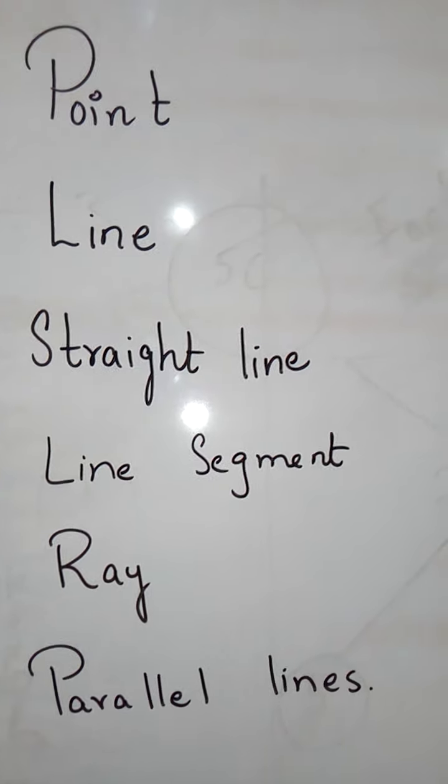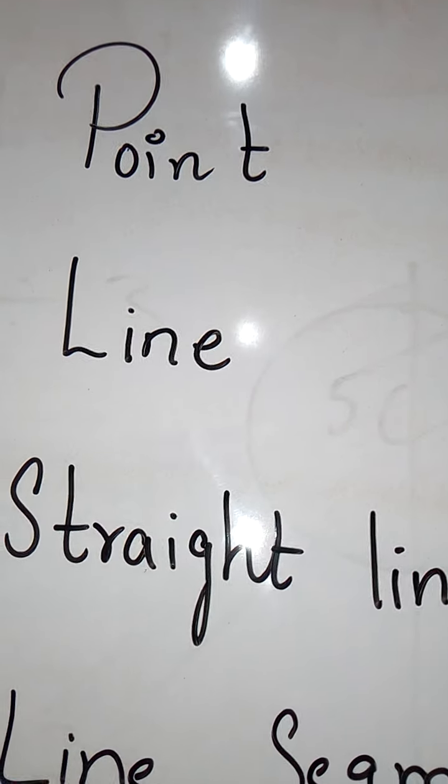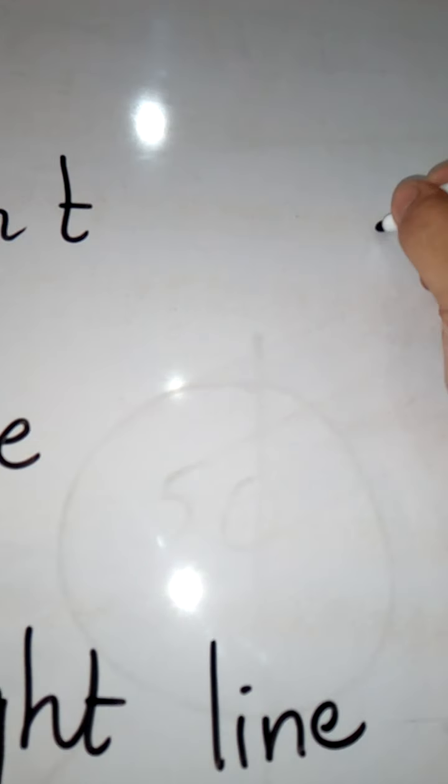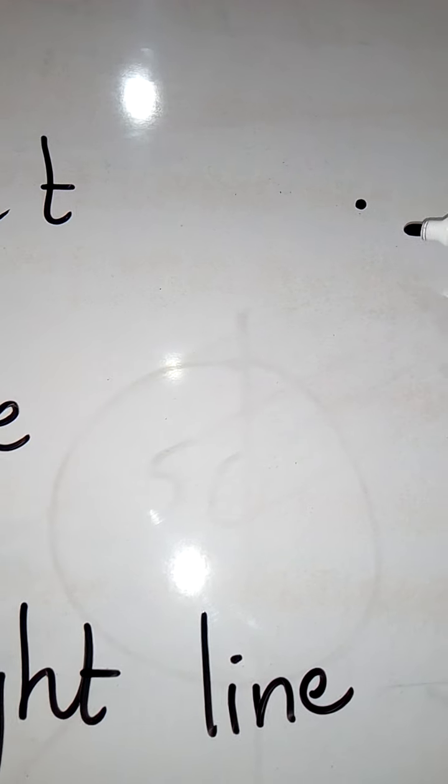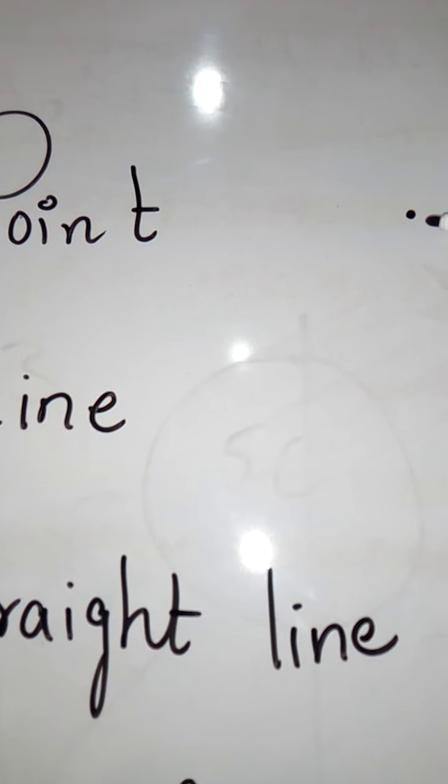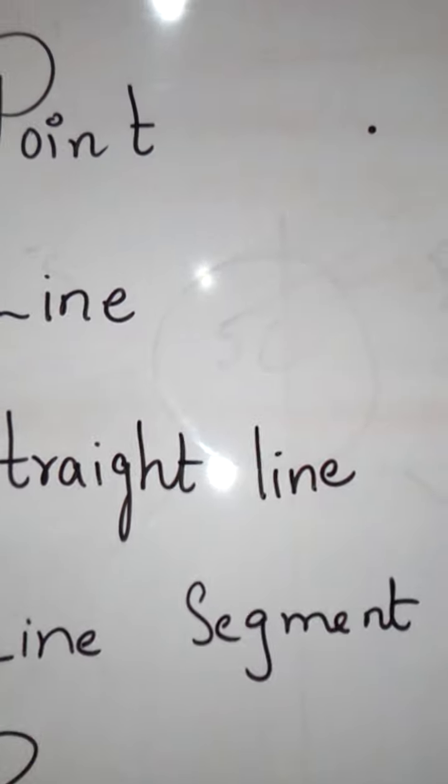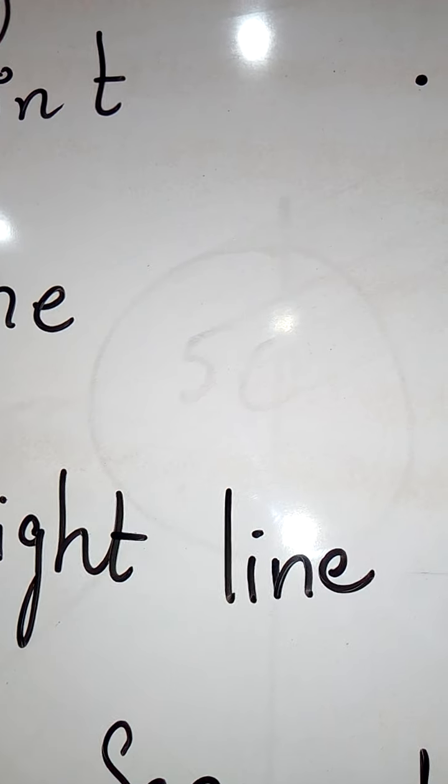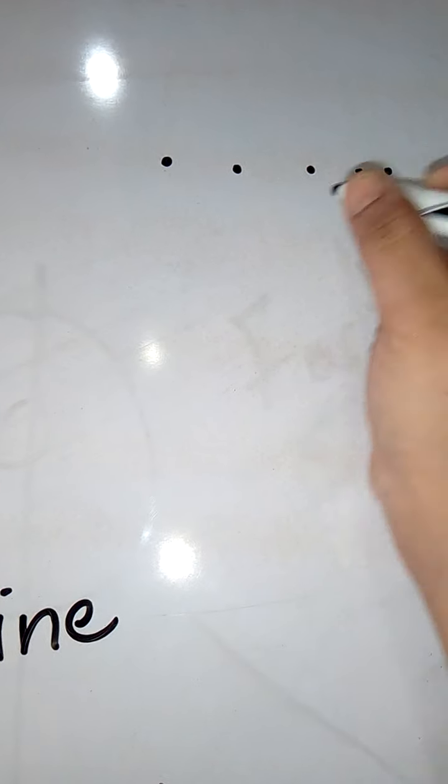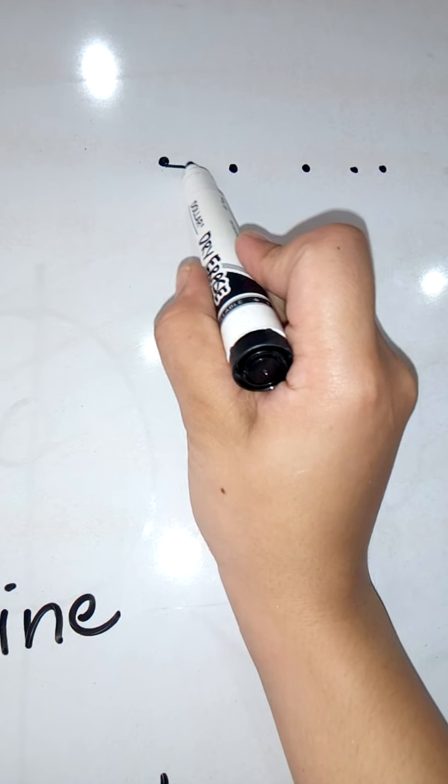The basic terms which we have learned in geometry start with the point. What is a point in geometry? The point will tell you the location. The point will tell you from where you have to take the start. And then after joining these points together, you get a line.